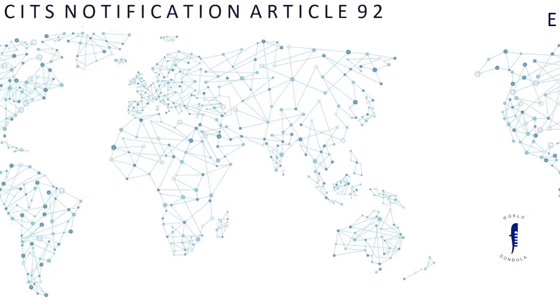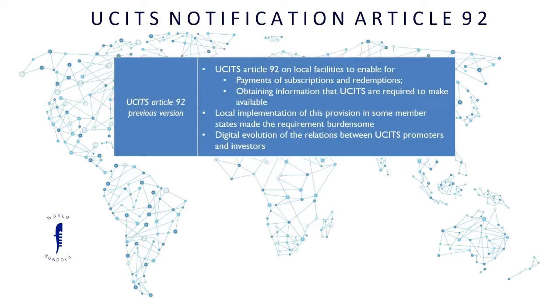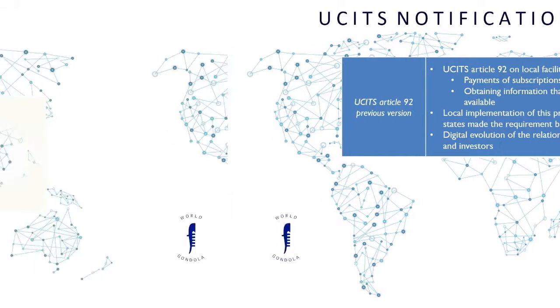UCITS Article 92 stipulates that UCITS will have to make available local facilities to investors for making payments of redemptions and subscriptions and to obtain information about the UCITS that needs to be made available.